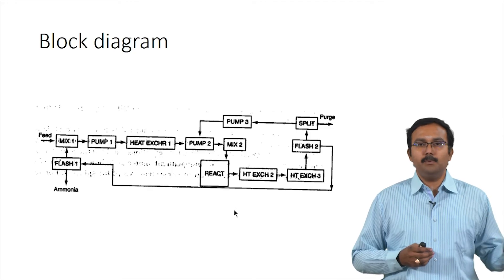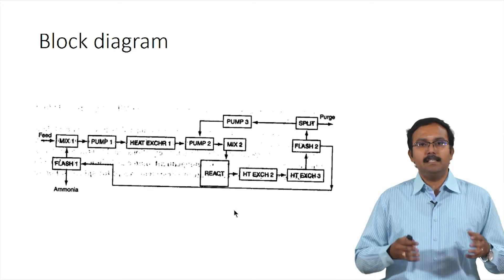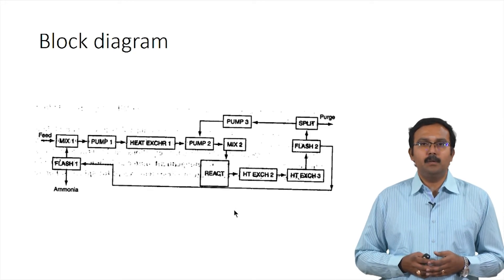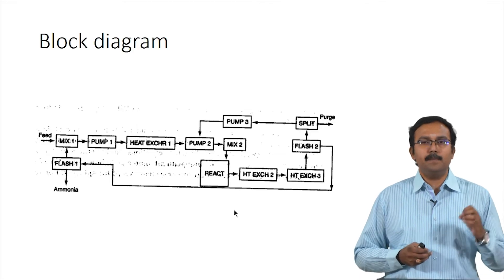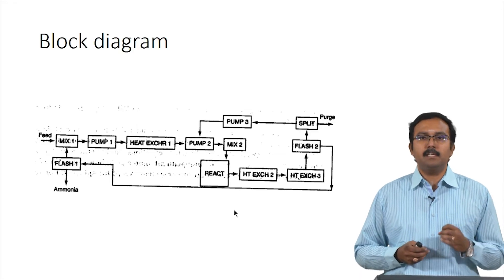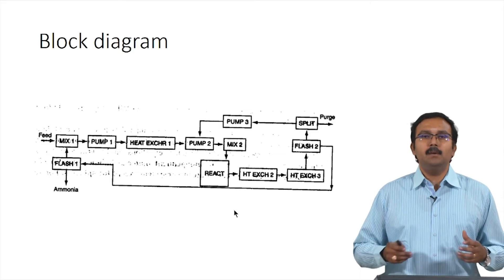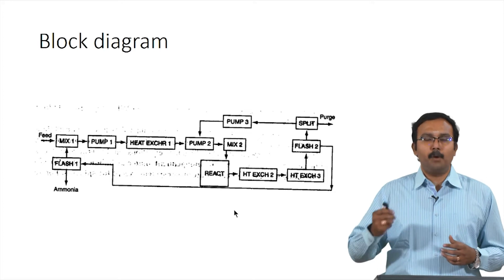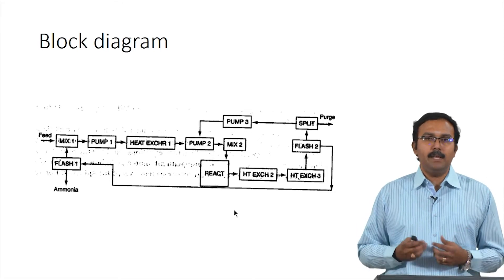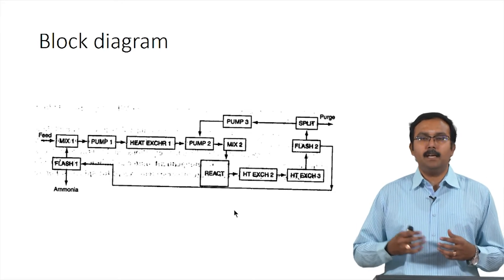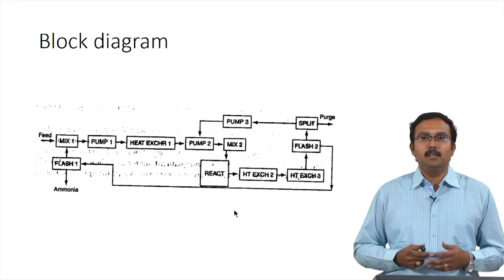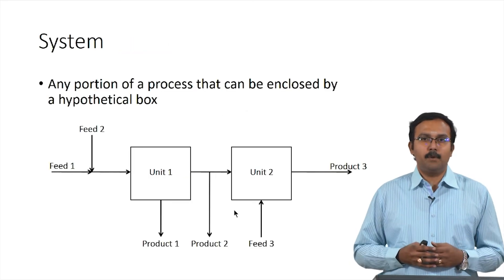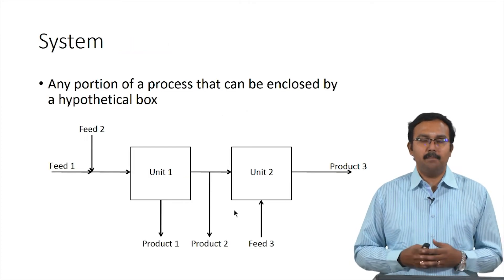The process described earlier is exactly depicted in this block diagram as well; however, instead of using specific representations for individual processes, we just draw blocks with proper labels. So these are two ways to represent a multi-unit process. Let us now look at a multi-unit process as an example.